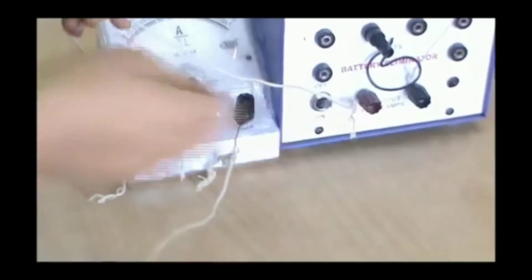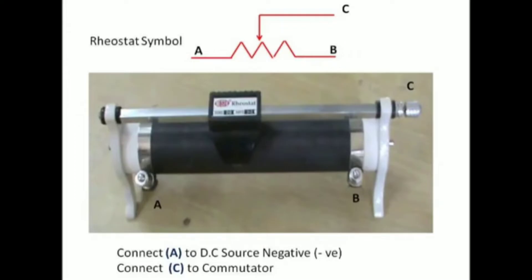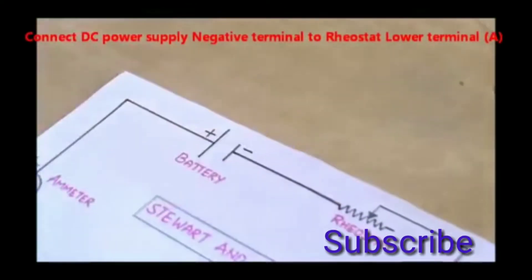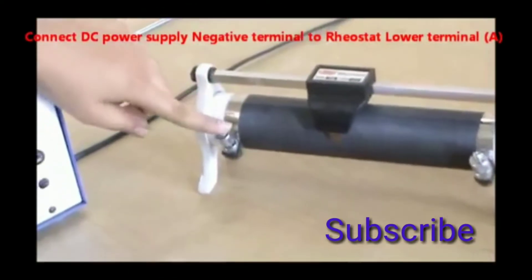Now observe that the rheostat has three points: A, B, and C. First of all we need to connect rheostat terminal A to the DC power supply, that means source negative.